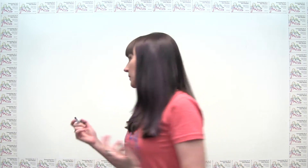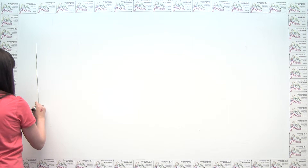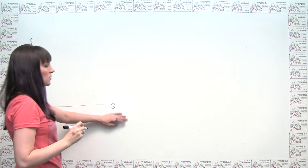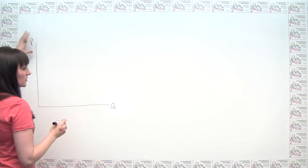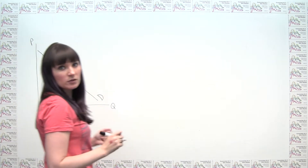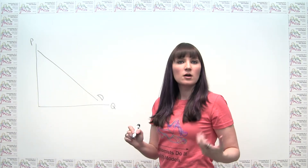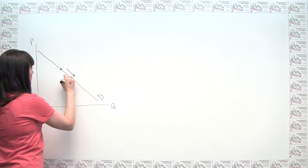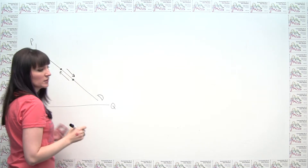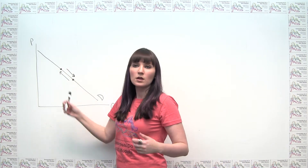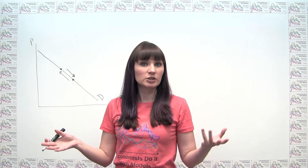We can start by drawing our different possibilities. The first possibility is a movement along the demand curve. The demand curve shows quantity on the horizontal axis and price on the vertical axis. We draw a downward sloping demand curve because of the law of demand. A movement along the demand curve is just a movement from one point to another on the same curve, and we generally see this when the price of the item changes.